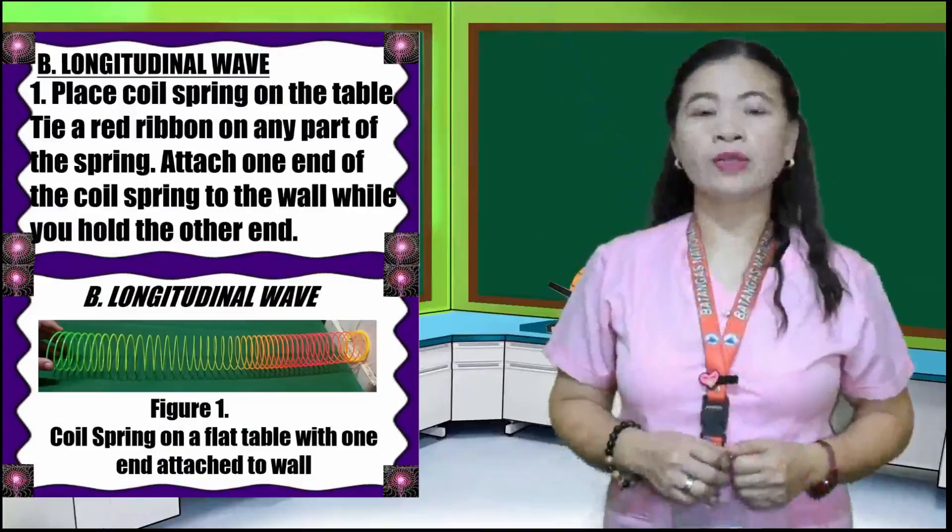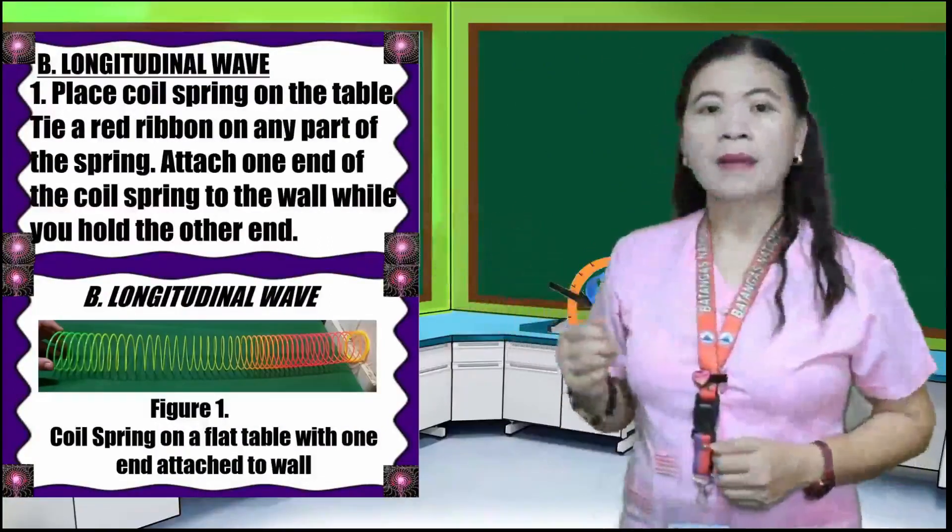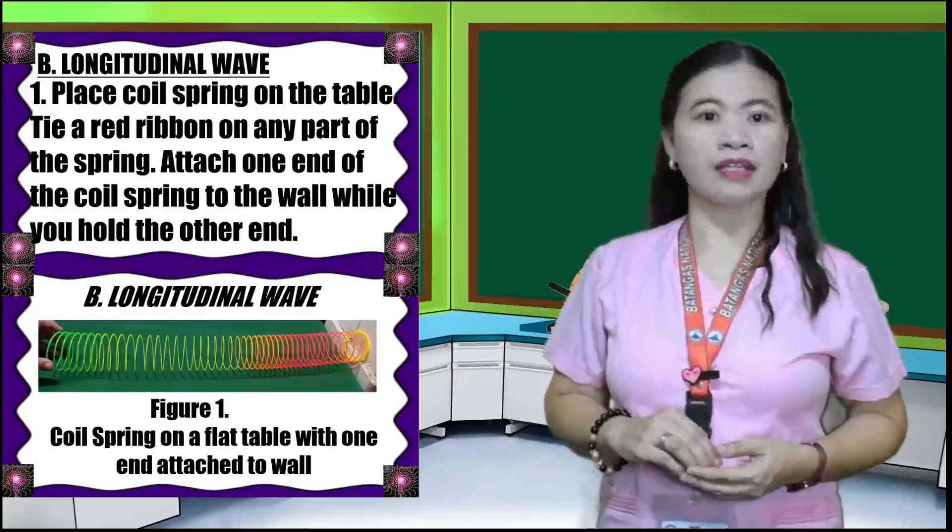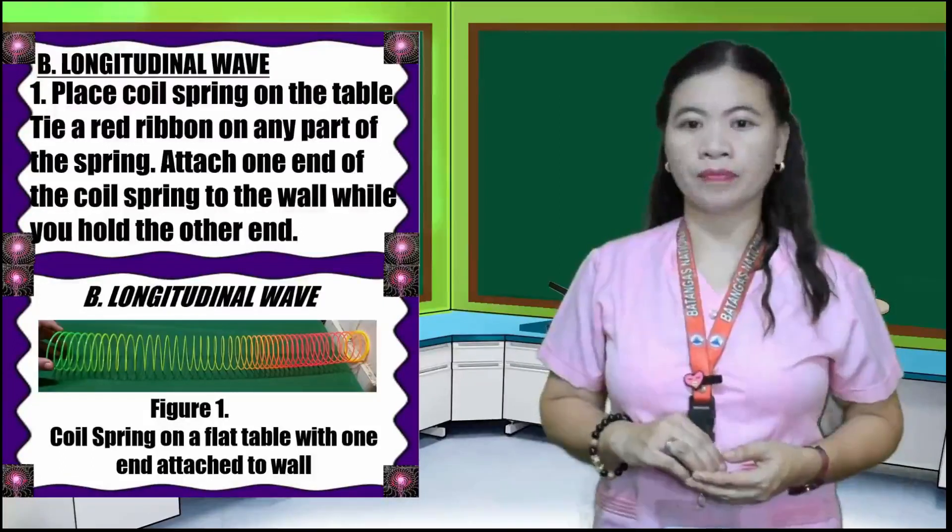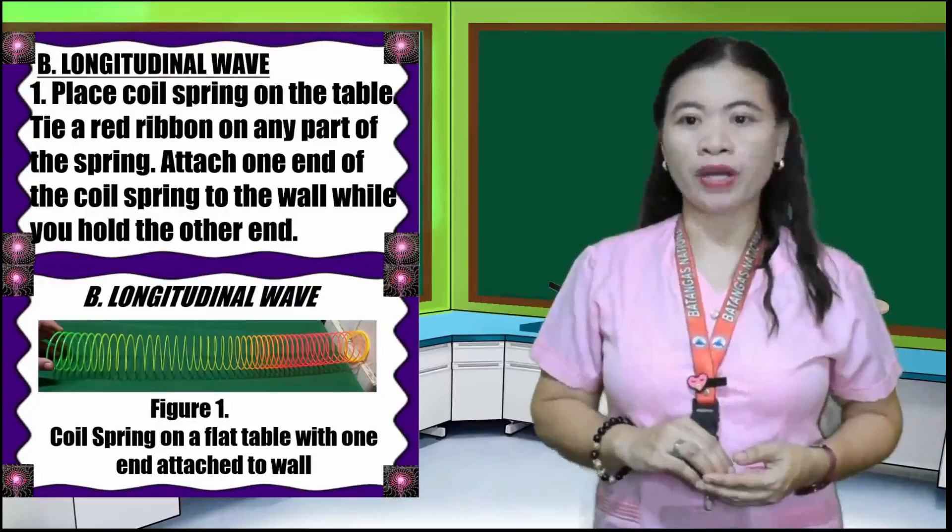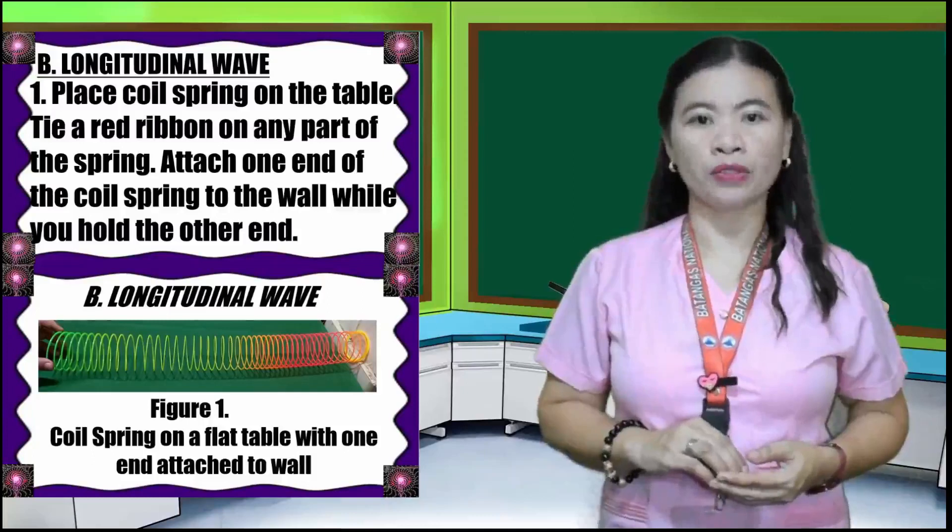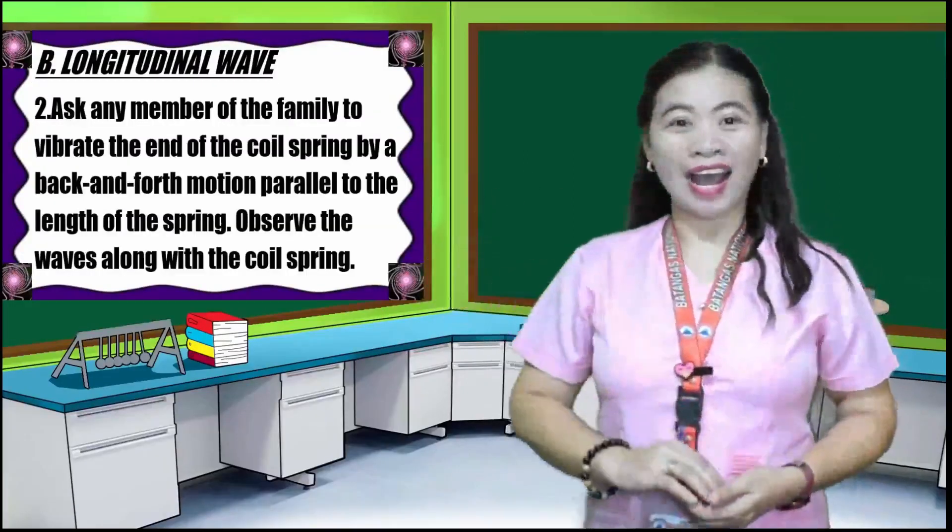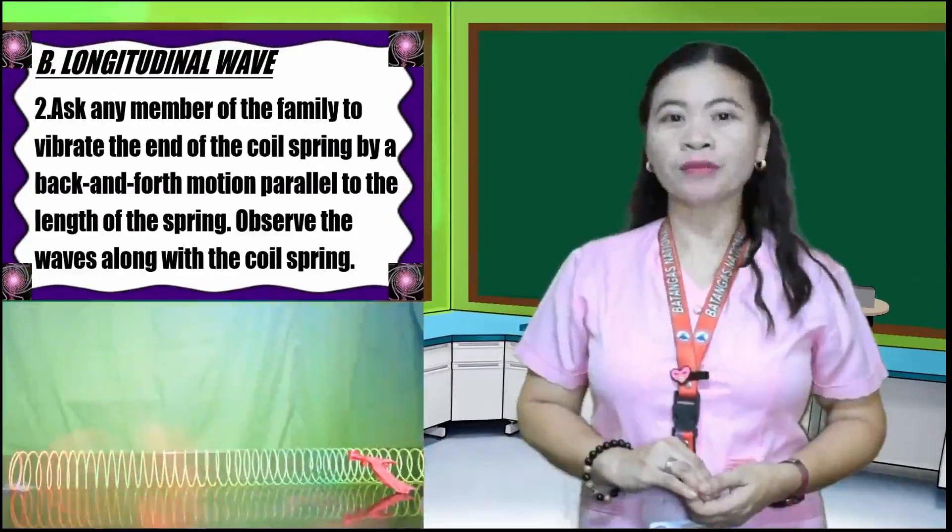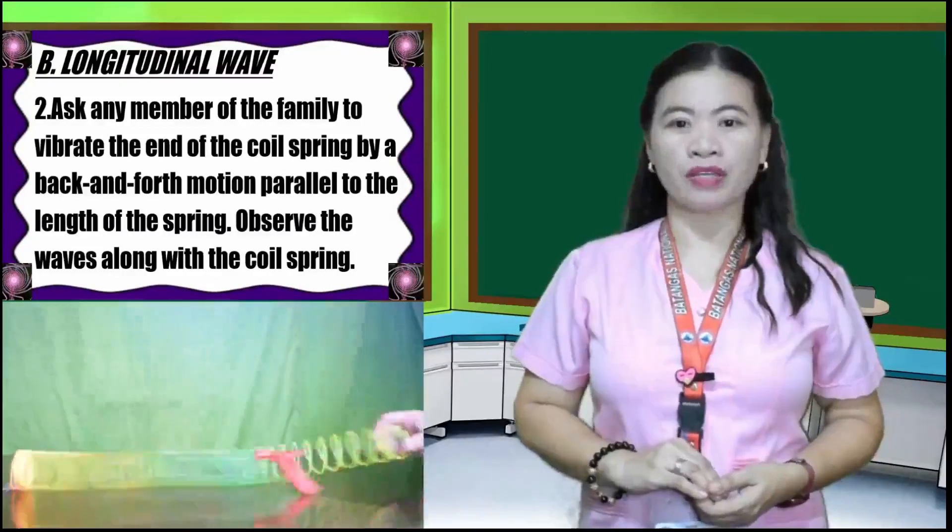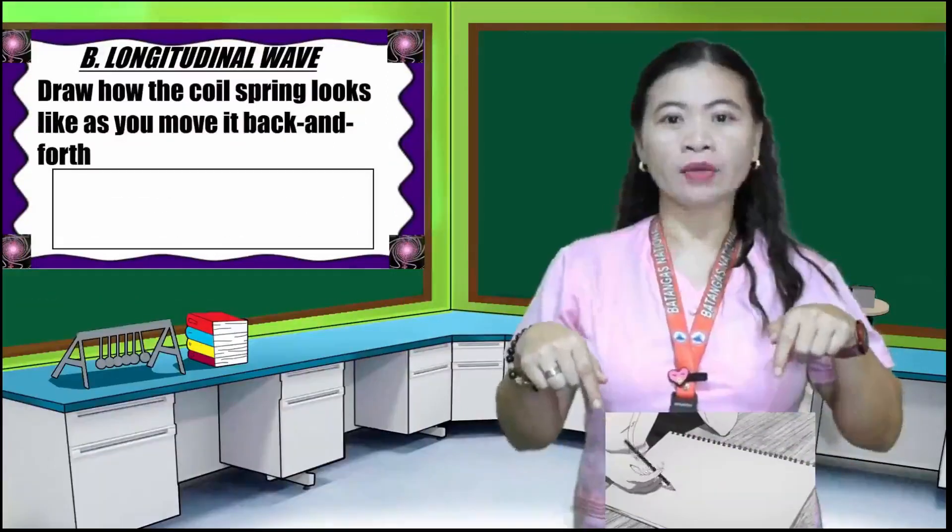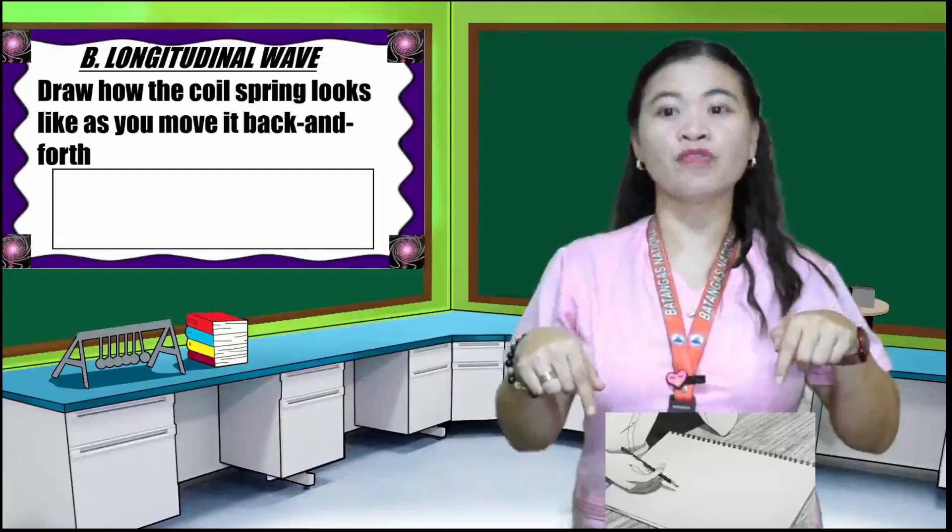Letter B, longitudinal waves. Number one, place a coil spring on the table. You can also use a spring of your notebook as an alternative coil spring or slinky toy. Tie a red ribbon on any part of the spring. Attach one end of the coil spring to the wall while you hold the other end. Number two, ask any member of the family to vibrate the end of the coil spring by a back and forth motion parallel to the length of the spring. Observe the waves along with the coil spring. Draw how the coil spring looks like as you move it back and forth.